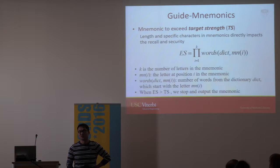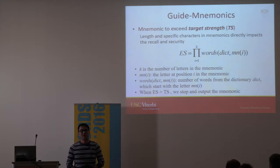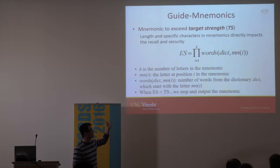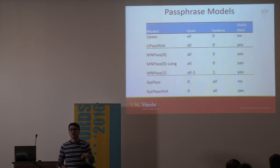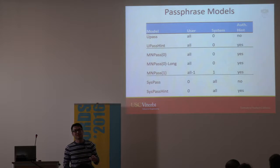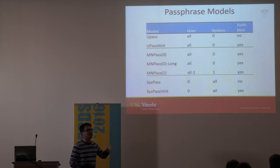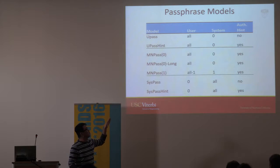We use the Google 20K corpus from the web — the most popular words used on the web — as a baseline to estimate word length per letter. We consider three different types of passphrase model. First, U-pass: the user chooses a five or six word passphrase. Second, Sys-pass: the system randomly generates a five or six word passphrase. Third, MN-pass: our proposed approach, where the system generates a mnemonic letter sequence and the user creates a passphrase using those letters.